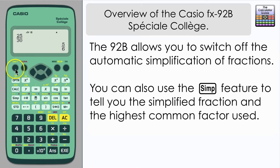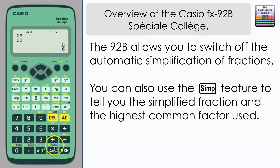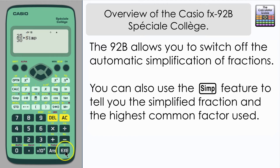What's unique about this calculator is you can actually turn the simplification off. If you go to the setup menu and down to simplify, the default mode is set to auto, but you can press 2 and set it to manual. This time when you press equals it will just repeat your unsimplified fraction back to you with a little arrow indicating that the fraction can be simplified. You can then use the simplification feature to simplify it and also see the factor by which both the top and bottom were divided — in this case the factor is 5, meaning top and bottom have been divided by the highest common factor of 5 to give the simplified fraction 5/6.